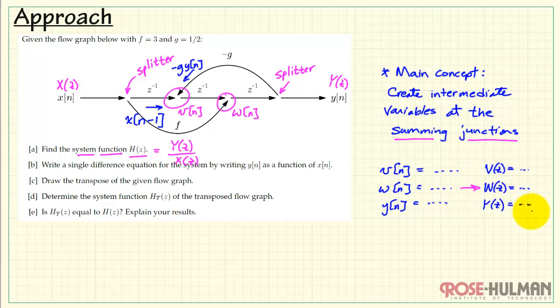Once we have these difference equations, we can apply the z transform and send those into the z domain. From here, we can solve for the ratio y of z to x of z, and that's our system function.